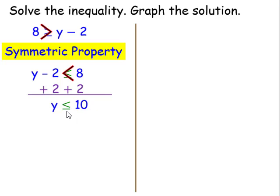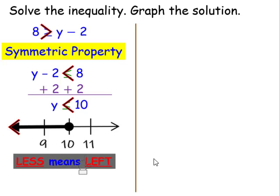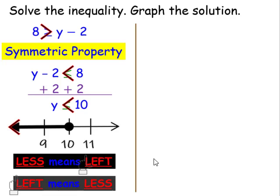Since we have an equal to sign, that means 10 is part of the solution set. So therefore, we're going to use a closed circle. The inequality symbol is facing to the left. Therefore, our arrow should be pointing to the left direction as well. Make sure you bold this particular arrow. When you think of less than, you should think of left, or left means less.